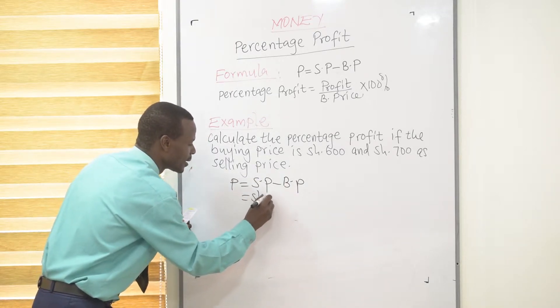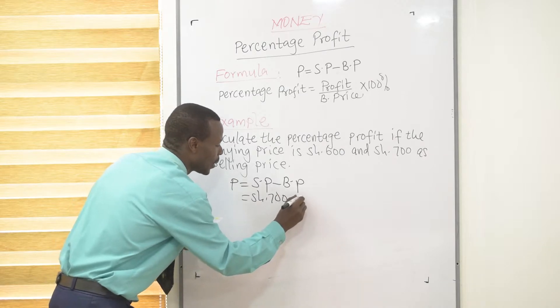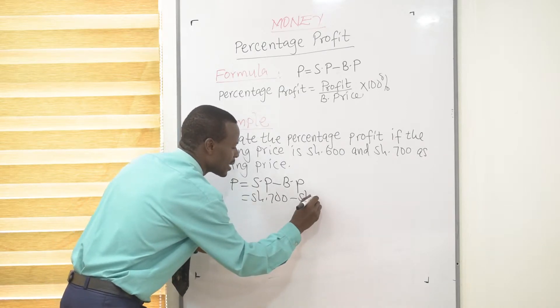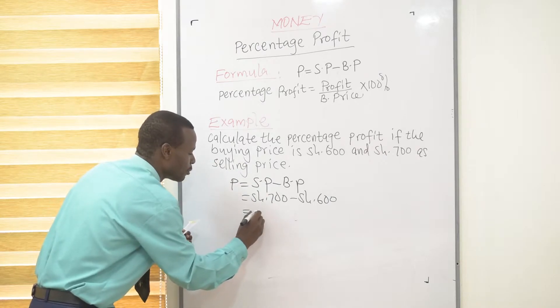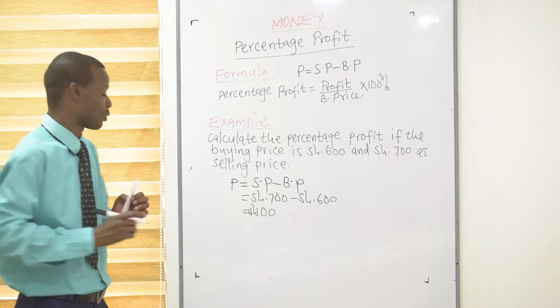Selling price is 700 shillings. You take away buying price, which was 600 shillings, and that will give you 100 shillings. That is our profit.